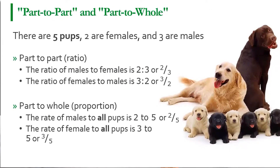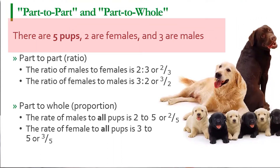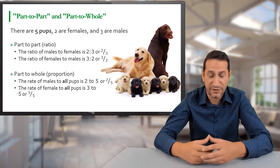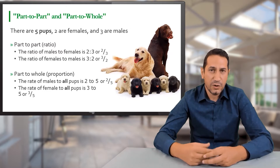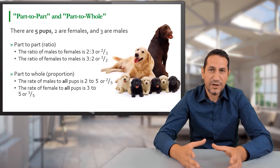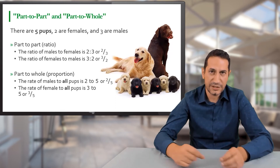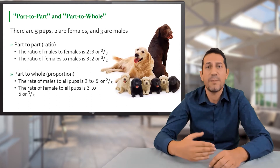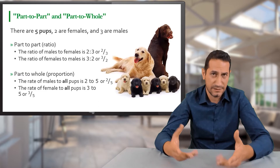To illustrate the concept of part-to-part versus part-to-whole: suppose we have five puppies, two female and three male. A ratio is part-to-part — two males to three females, or vice versa — they are mutually exclusive. But if we compare a part to the whole population of puppies, such as two males to five total, or three females to five total, that is technically still a ratio but it is a proportional ratio — a proportion by our definitions.